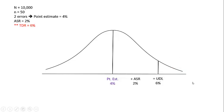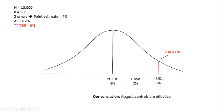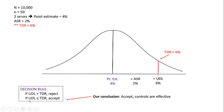To illustrate the boundary case: if the tolerable deviation rate equals 6%, the same as the upper deviation limit, that also leads to acceptance — equal to or outside the bound means accept, while inside the bound means reject. So the decision rule is: accept when the upper deviation limit is less than or equal to the tolerable deviation rate.